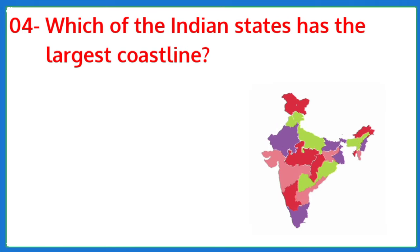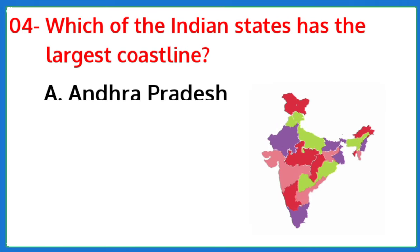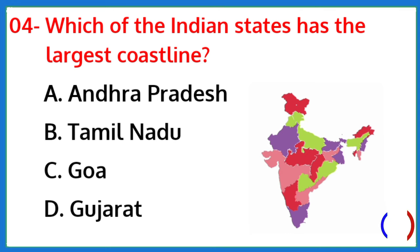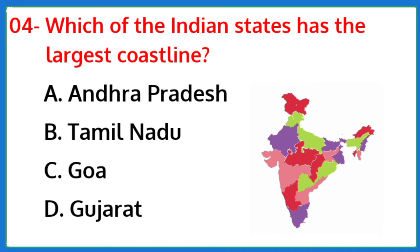Which of the Indian states has the largest coastline? The correct answer is option D: Gujarat.